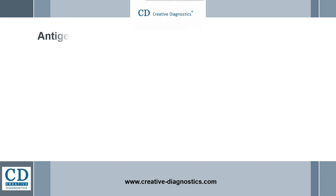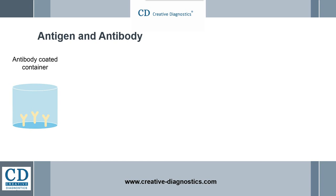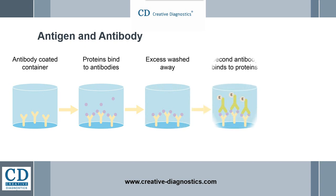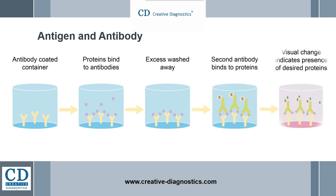An important consideration in designing a sandwich ELISA is that the capture and detection antibodies must recognize two different non-overlapping epitopes. When the antigen binds to the capture antibody, the epitope recognized by the detection antibody must not be obscured or altered. Capture and detection antibodies that do not interfere with one another and can bind simultaneously are called matched antibody pairs, and are suitable for developing a sandwich ELISA.